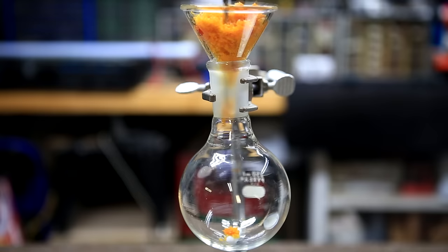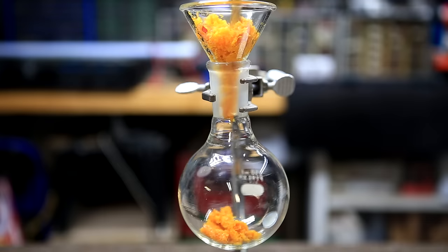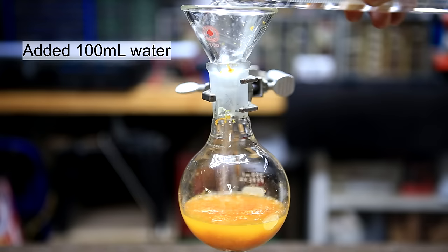The orange peels can then be transferred to a round bottom flask. To this was added a hundred milliliters of water. The water also helped to rinse off orange peel that remains stuck to the funnel.